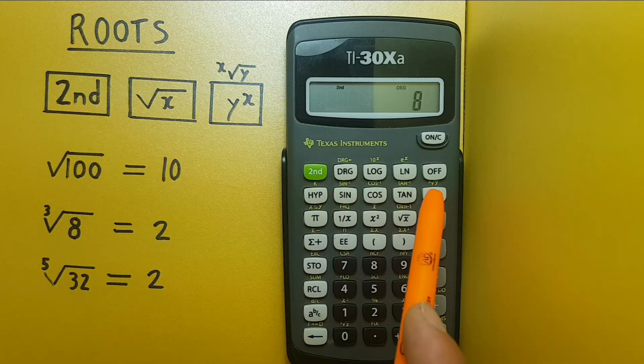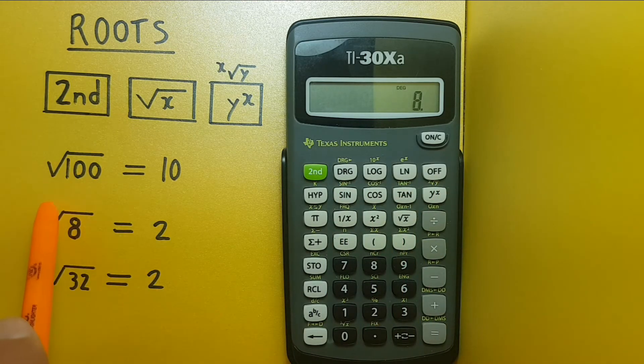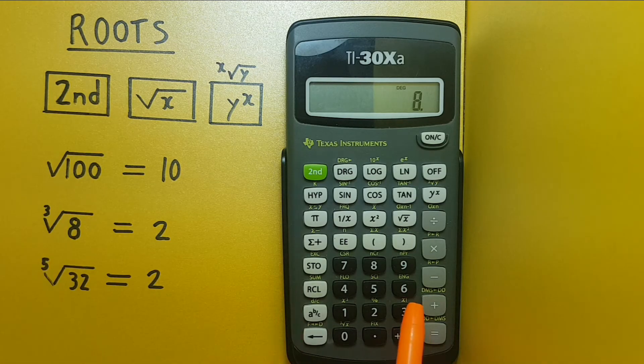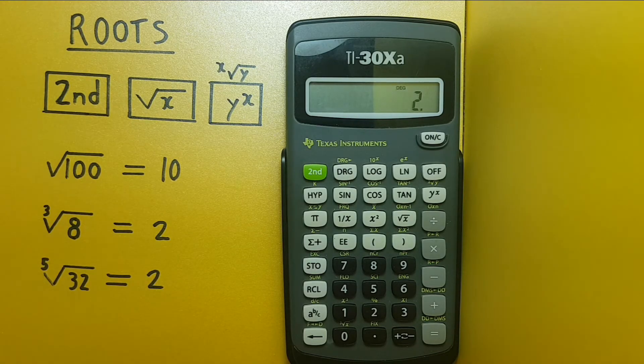So we go second function Y to the X and then 3 to tell it we're looking for the cube root. 3 equals and it gives us 2 which again is the correct answer.